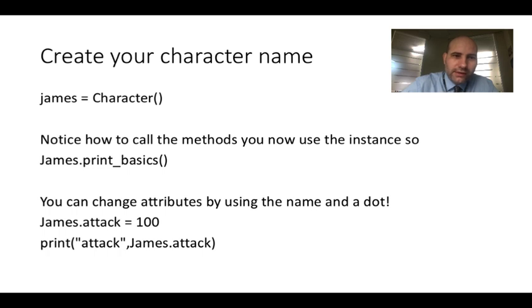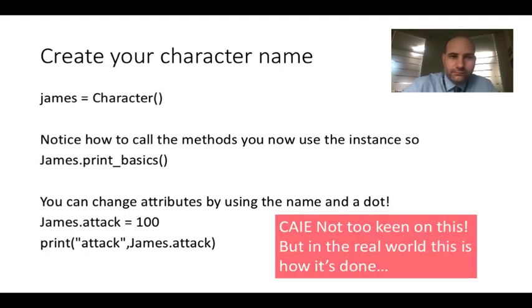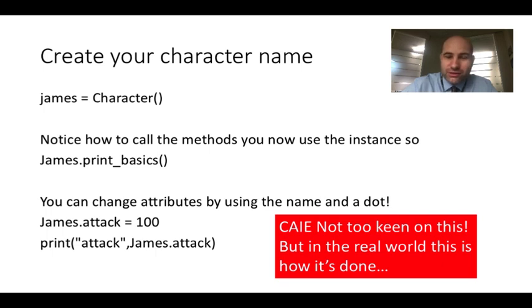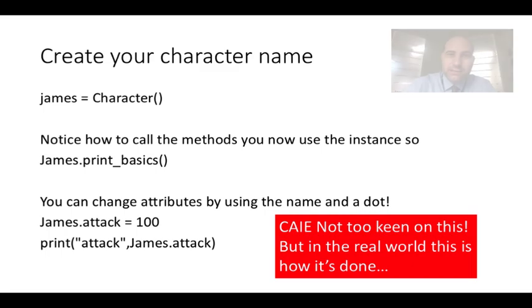We saw in that example James equals the character. Notice how to call the method. You can now use the instance, so it's James.printBasics, and you can change attributes by using the name and a dot. Very simple. Now a word of warning: I am teaching the A-level course and CAIE are not too keen on this. But in the real world, this is how it's done in Python. Understand that for your exam they're going to make it a little bit more complicated and it's a little bit un-Pythonistic. But in terms of what you can do in real programming, job done.